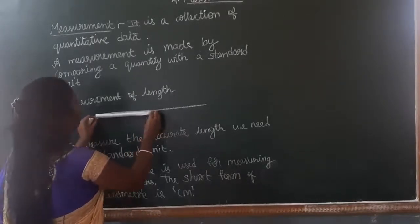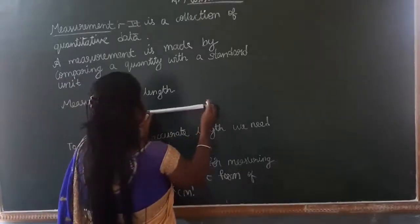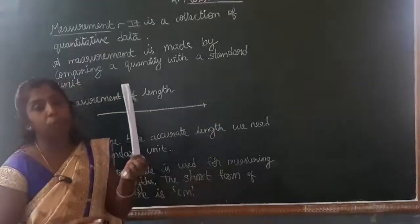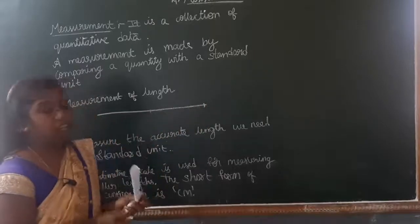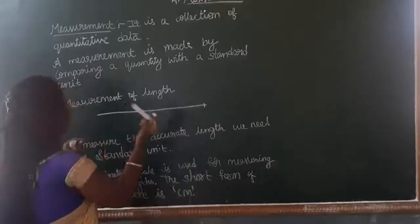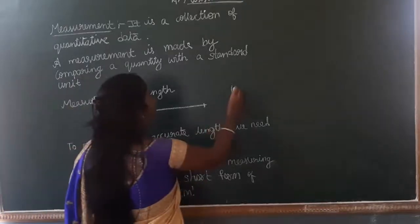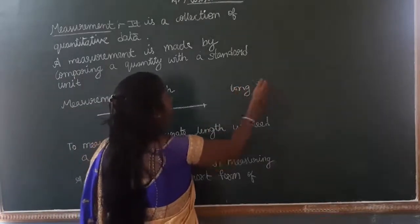So here start at start. So here one, two. It takes two folds. So one and two, two steps. Then I am using this paper to measure this. So long step is two.